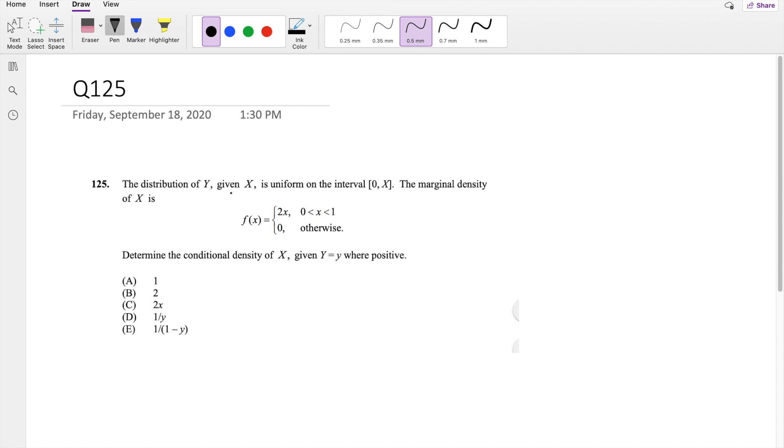So they say the distribution of Y given X is uniform on the interval. When it's uniform, we know the probability distribution function to be 1 over (b minus a), where a is the lower limit and b is the upper limit. So in our case, the distribution of Y given X is equal to 1 over (x minus 0), so that's just 1/x.